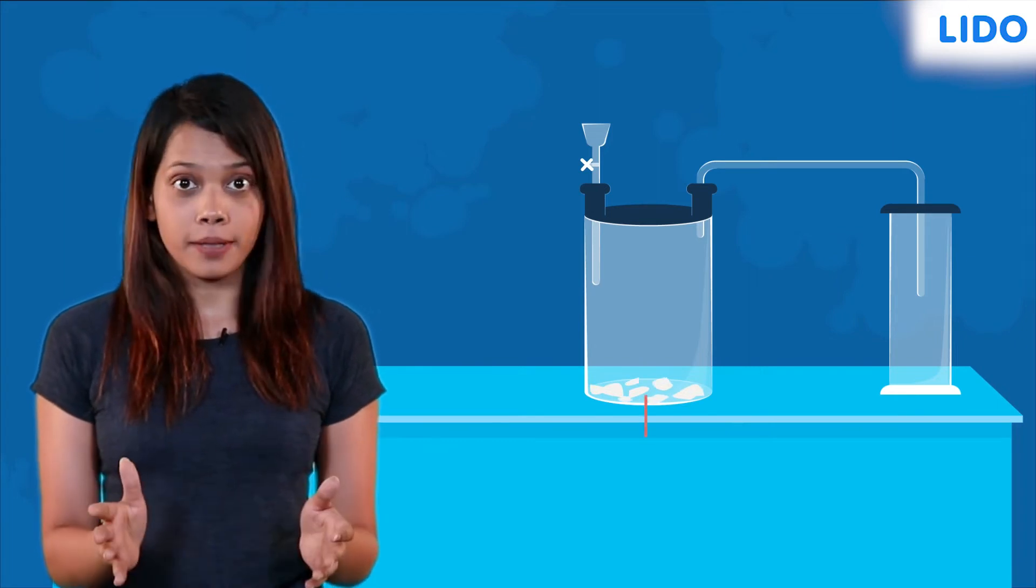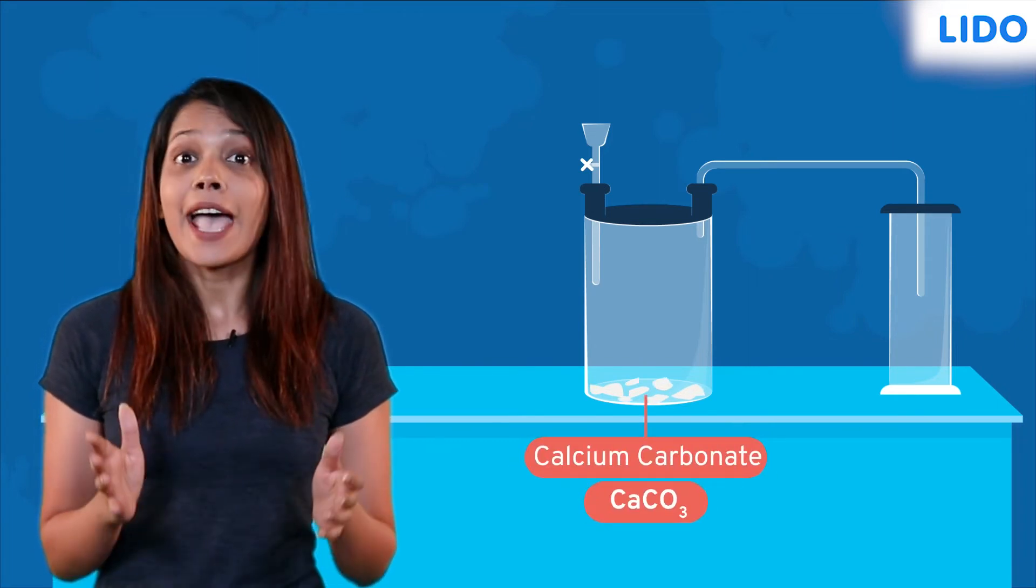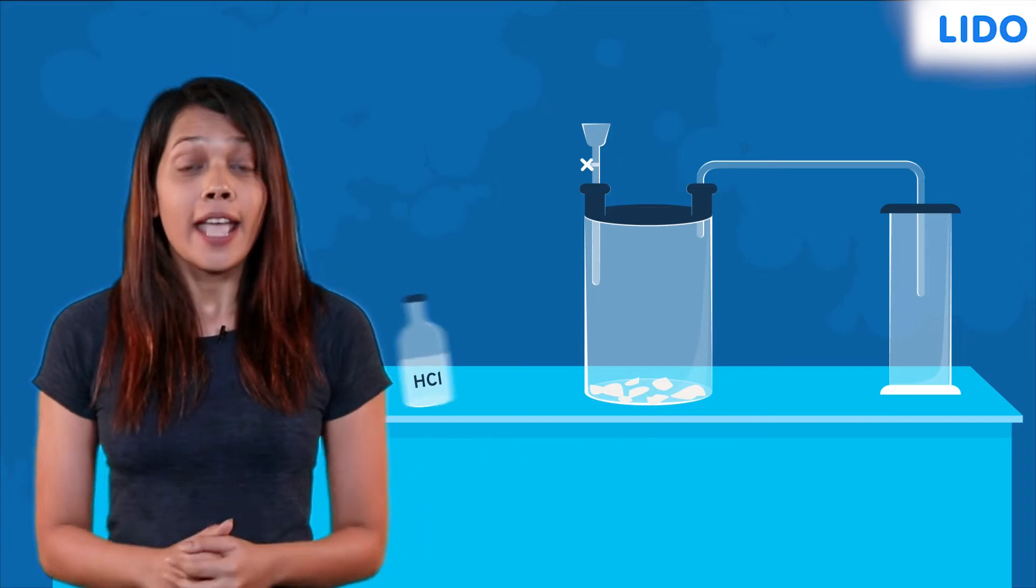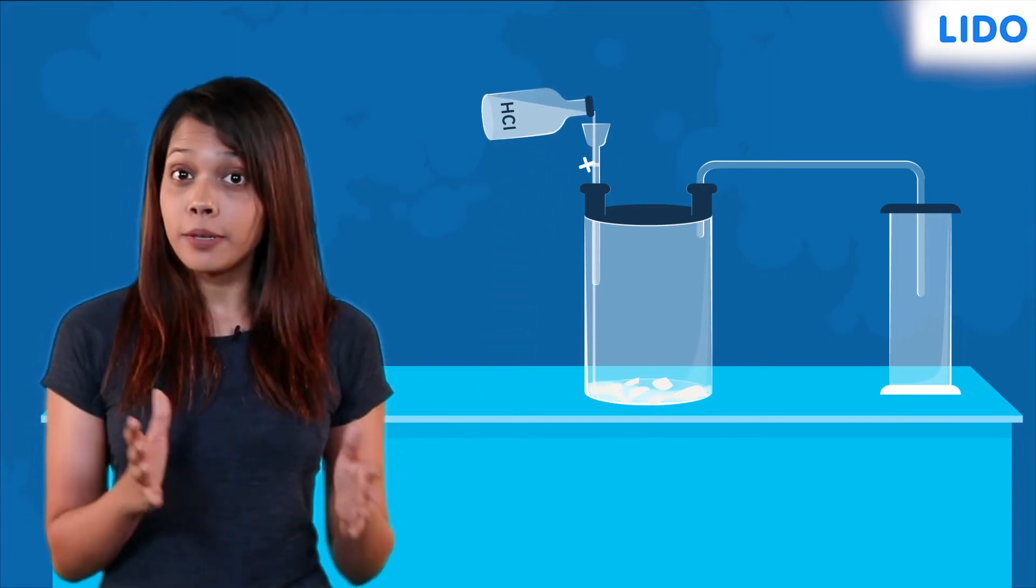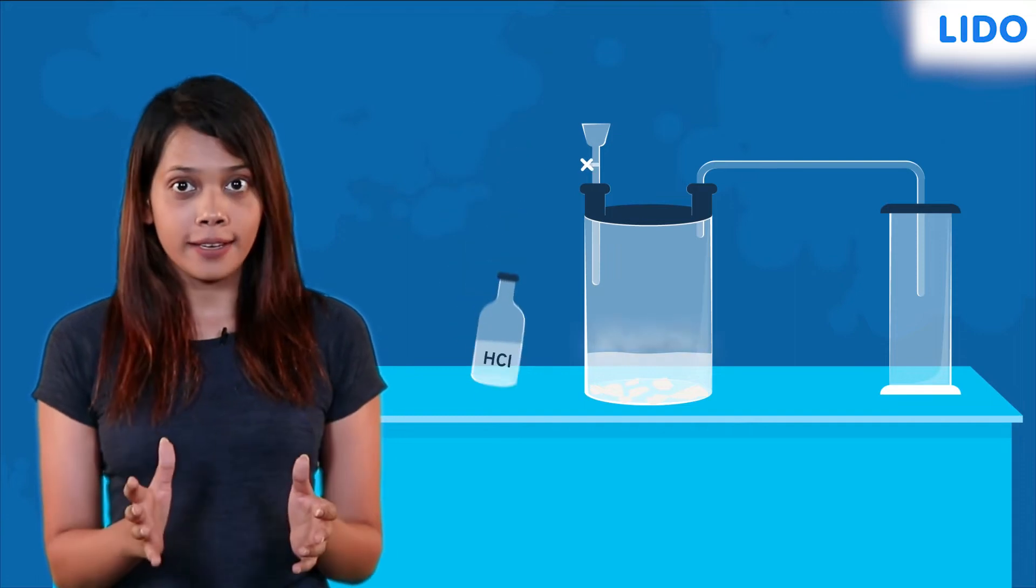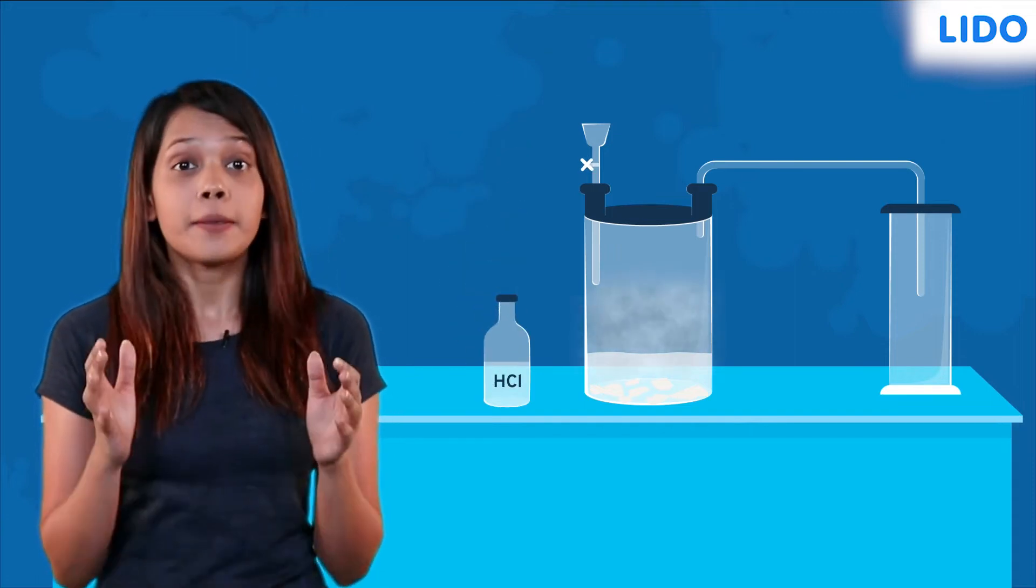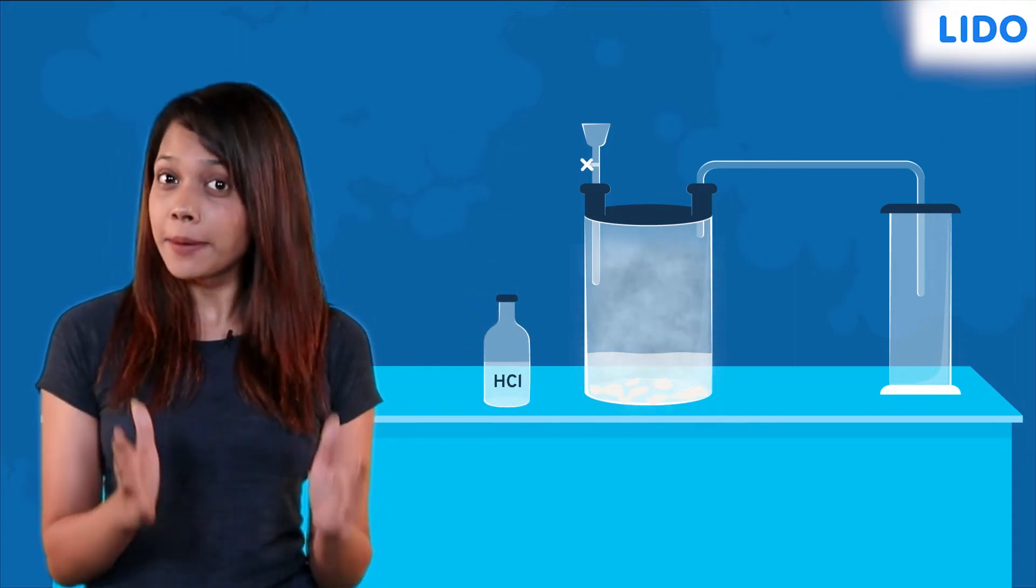To get started, we need pieces of marble or calcium carbonate as the starting material. Now we pour some dilute hydrochloric acid into the marble chips through the thistle funnel in such a way that the marble chips are completely immersed in it.